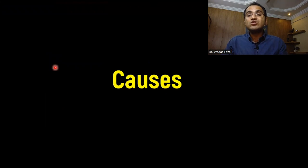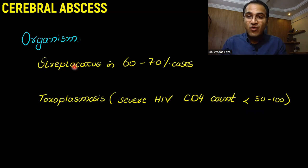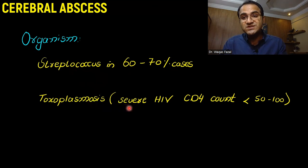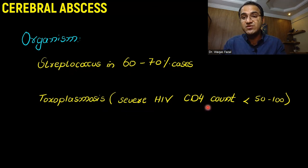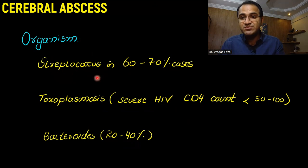Coming to the causes and source of infection for cerebral abscess, the organism involved is mainly Streptococcus in 60 to 70 percent of cases. Toxoplasmosis is also seen in severe HIV patients with CD4 count less than 50 to 100, and Bacteroides can also be found in 20 to 40 percent, but Streptococcus is the main cause.